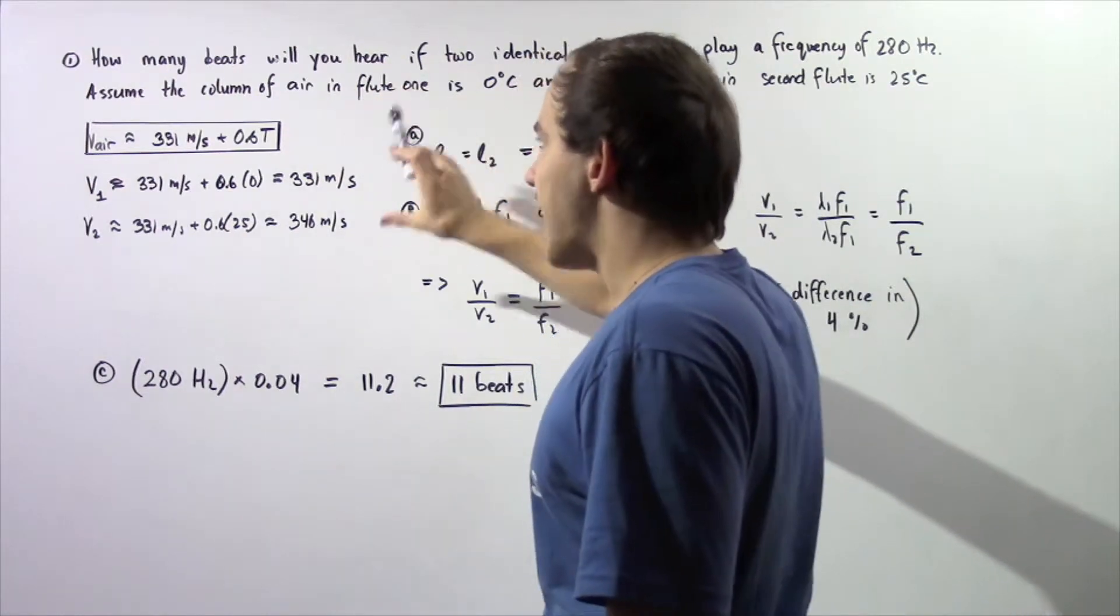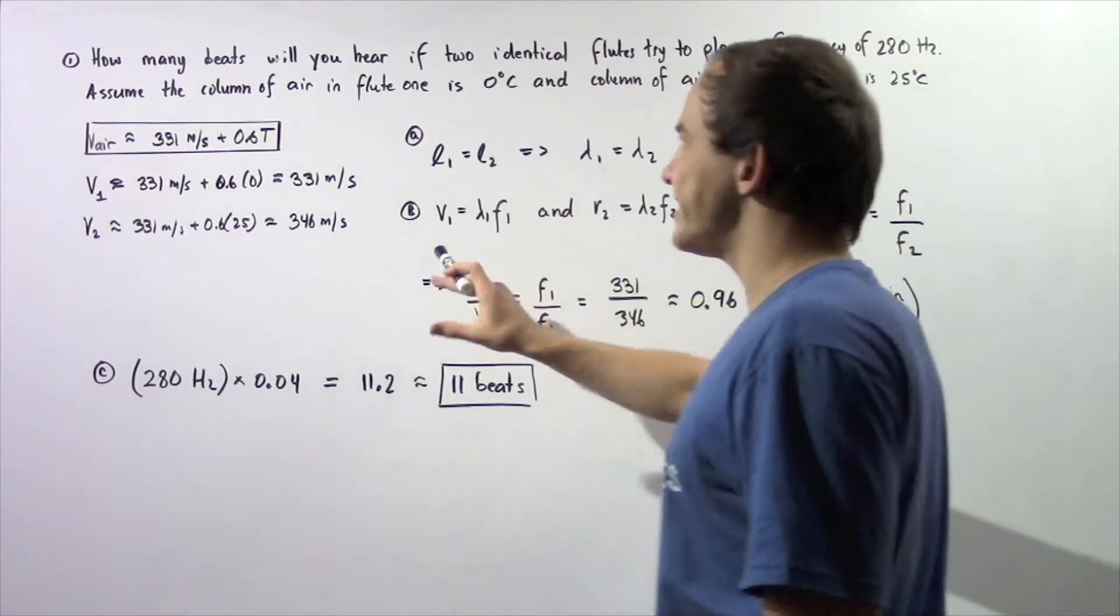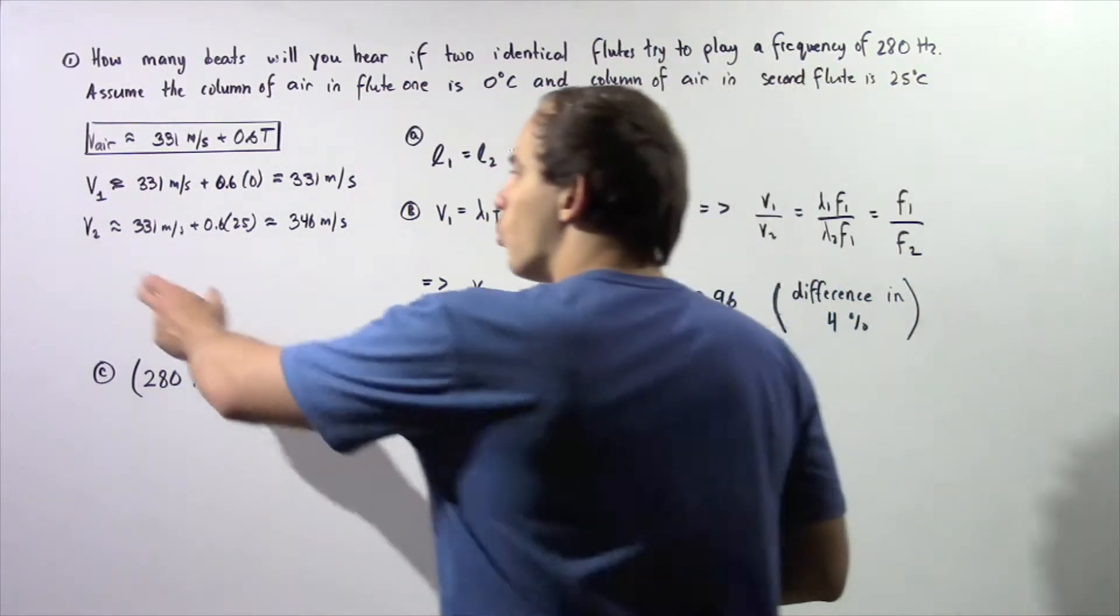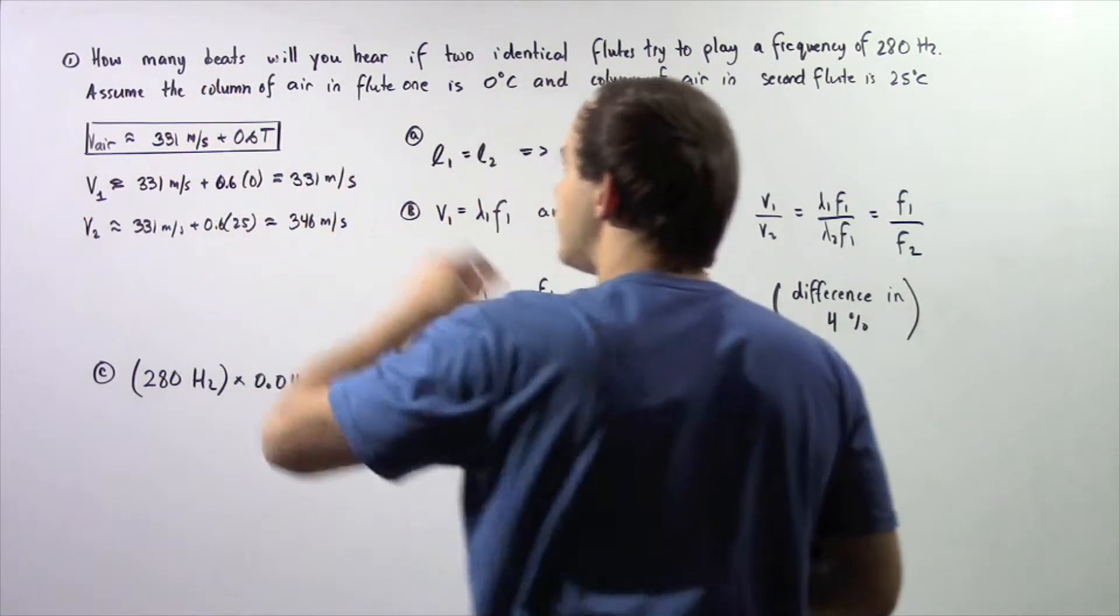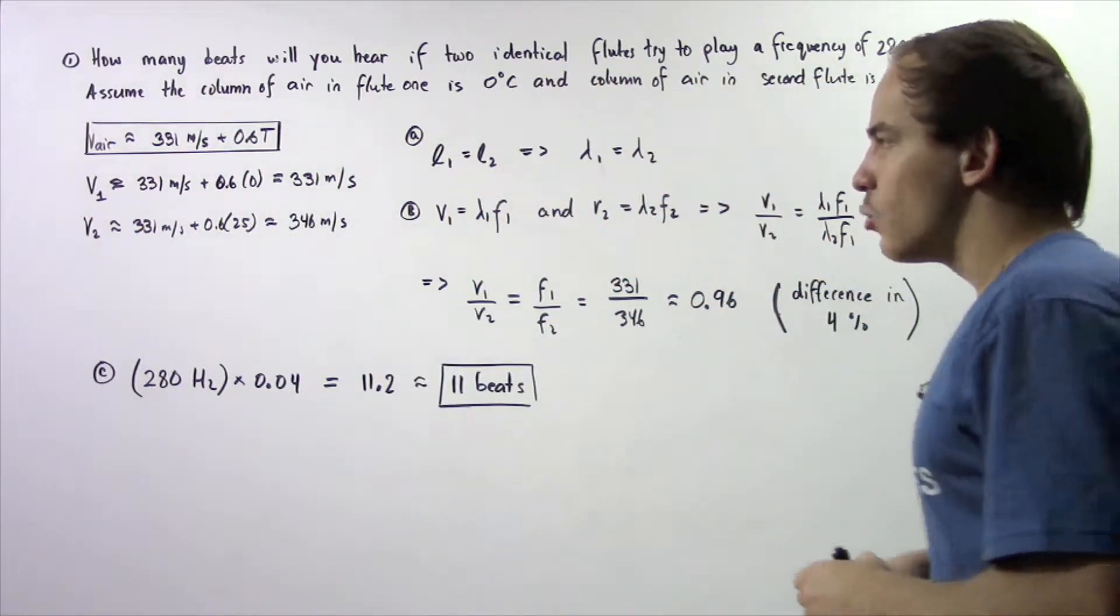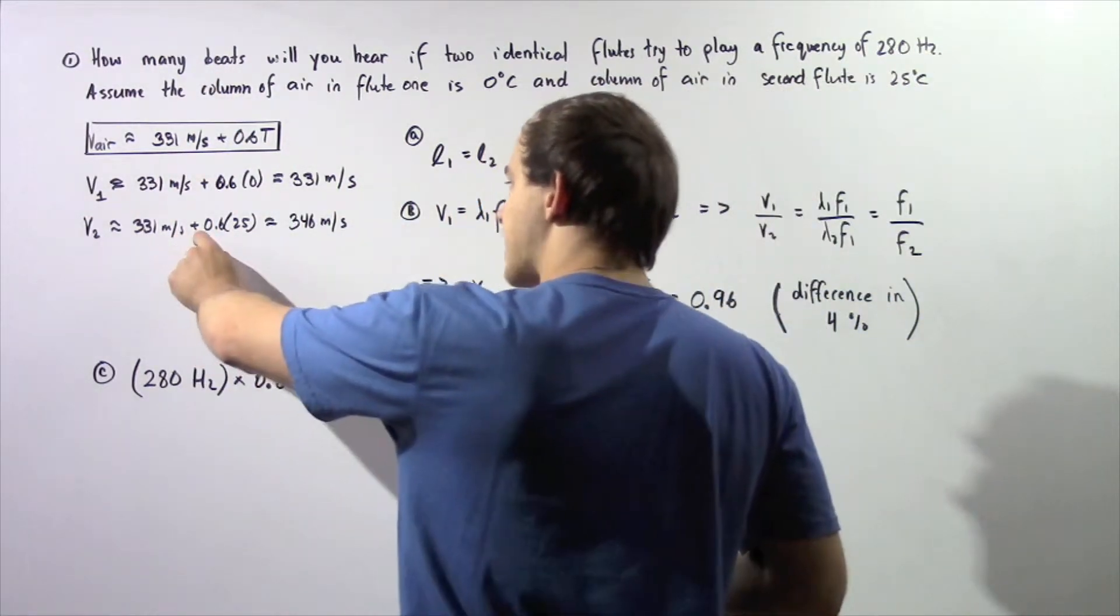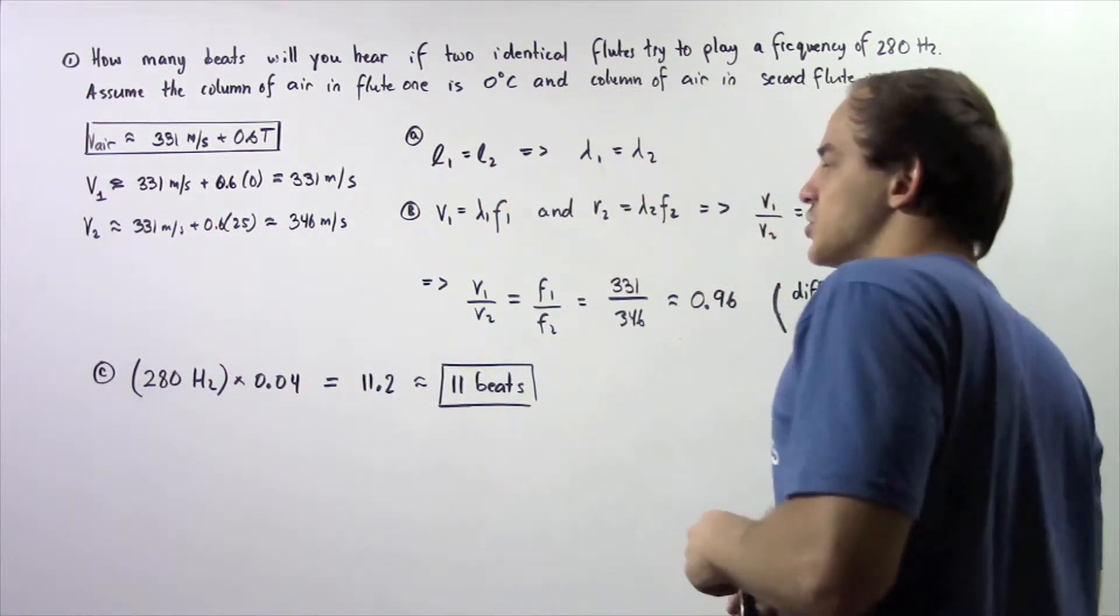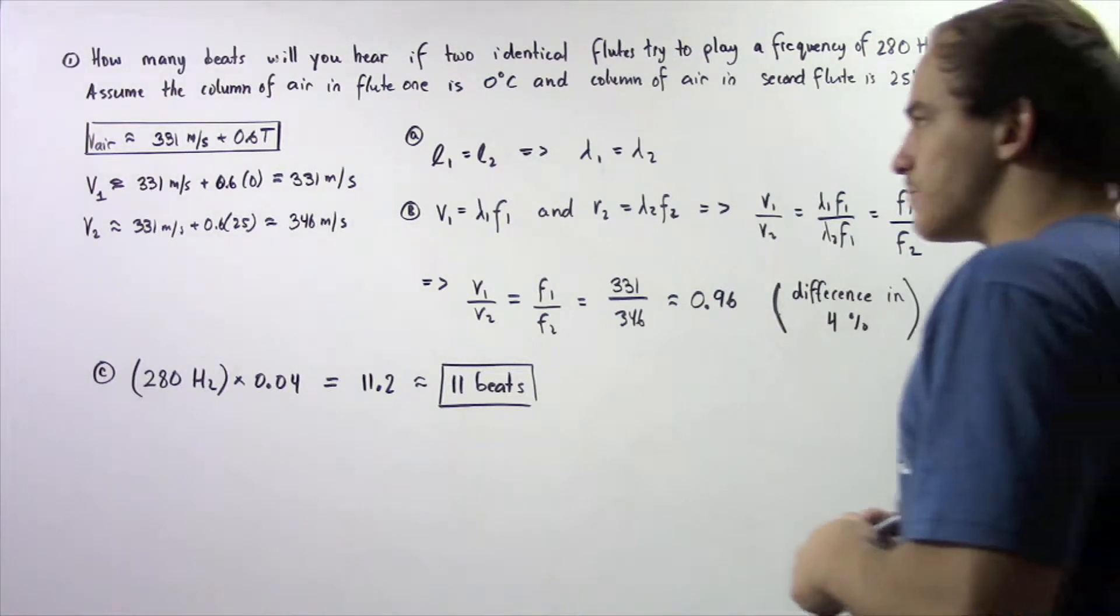So this means that the velocity of the standing wave produced in flute number one has this quantity. Now, what is the velocity of the standing wave in flute number two? Well, 331 meters per second plus 0.6 times 25 gives us 346 meters per second.